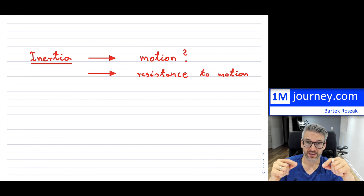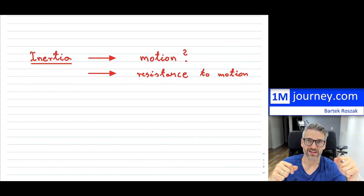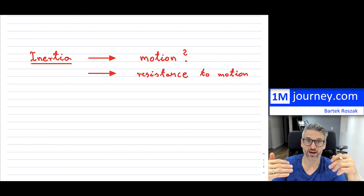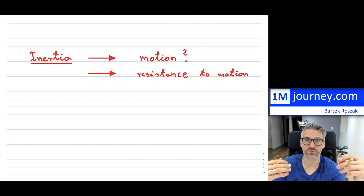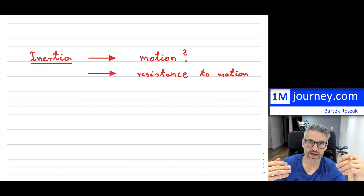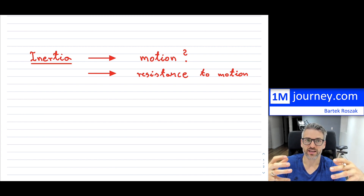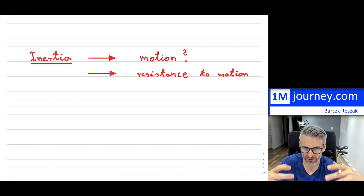Inertia is also the resistance to changing motion. If you are moving at a certain velocity and you want to stop or slow it down, you're going to have to apply some forces. In order to stop or slow down an object, you're trying to overcome its inertia — its tendency to continue on its path the way it is, unless you apply a force. If you think of mass, a bigger object like a car moving is very difficult to stop; it's because the car has a lot of mass and therefore a lot of inertia.